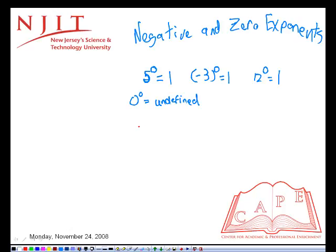Negative exponents indicate a reciprocal. For example, two to the power of negative three. This is the reciprocal of two to the three, which is one-eighth.